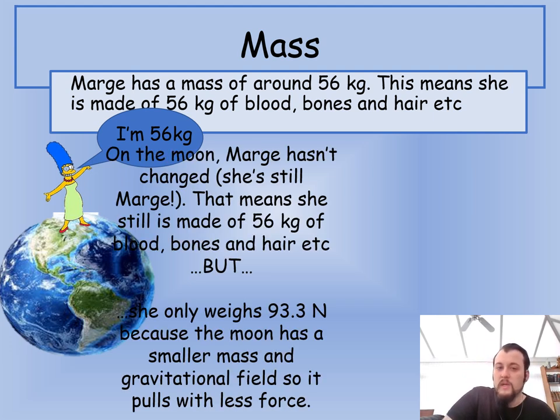So on the moon, her mass won't change because she's still exactly the same, but she only weighs 93.3 newtons. So what you can see there is there's not even two newtons per kilogram on the moon. So that's what it means. That's what it means when it says that you weigh less elsewhere, but your mass is the same.